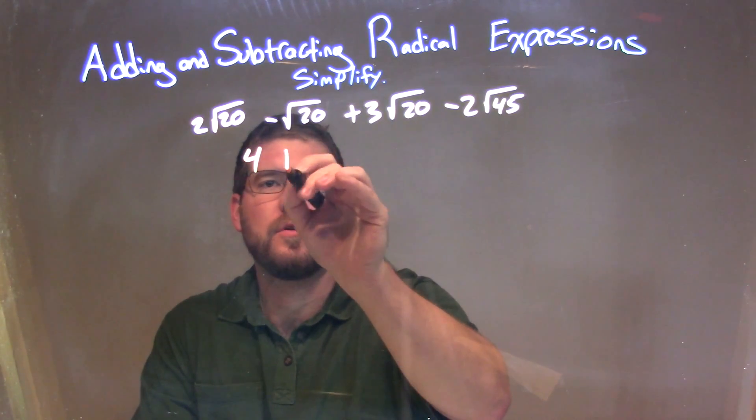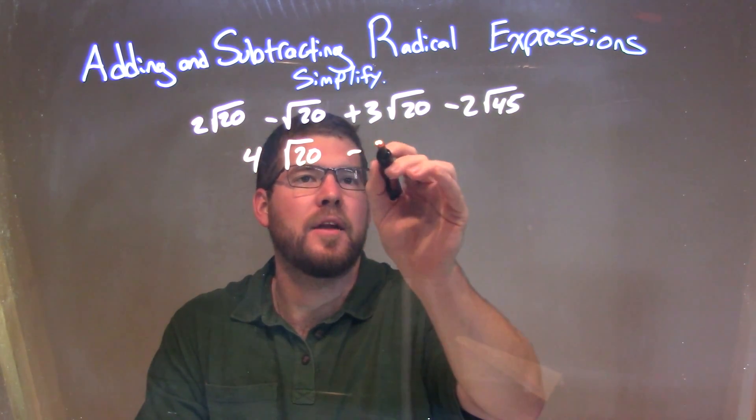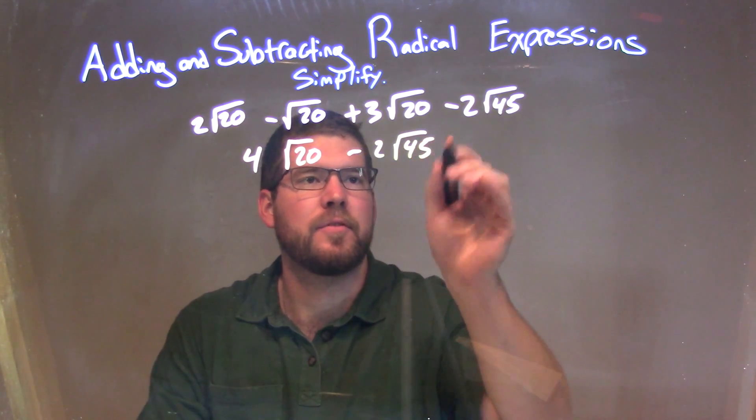So I'm going to put 4 here—4 square root of 20, combining all three of these together, minus 2 square root of 45.